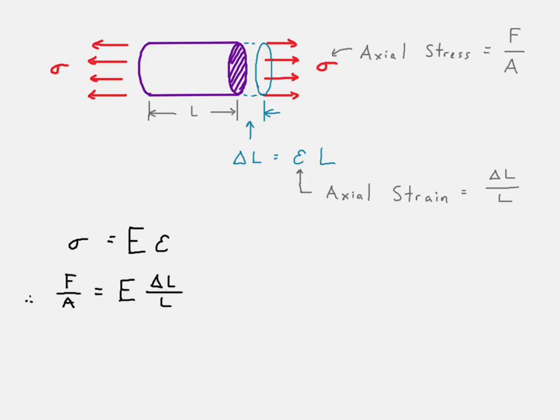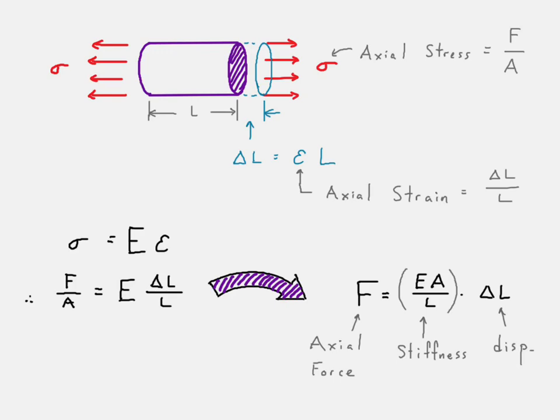And so if you make those substitutions, we can rearrange our Hooke's Law equation in the following form. And you'll notice that this is the same type of form that we have for the spring equation, which relates the force going through the spring and the resulting displacement, where this would be our stiffness.